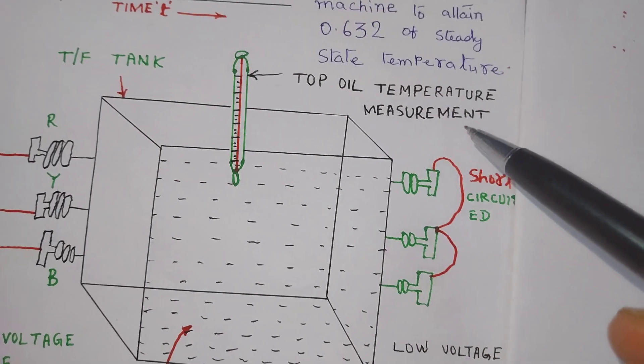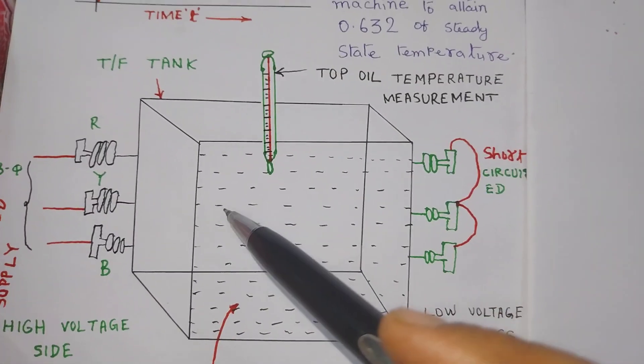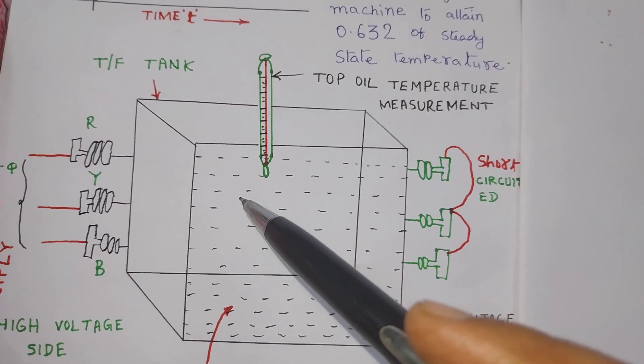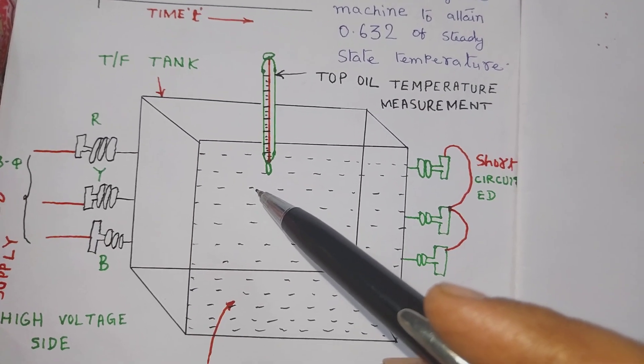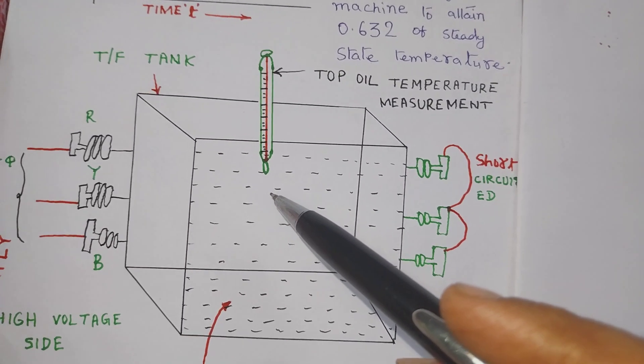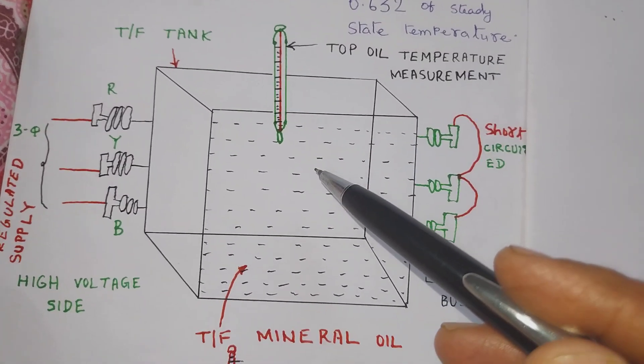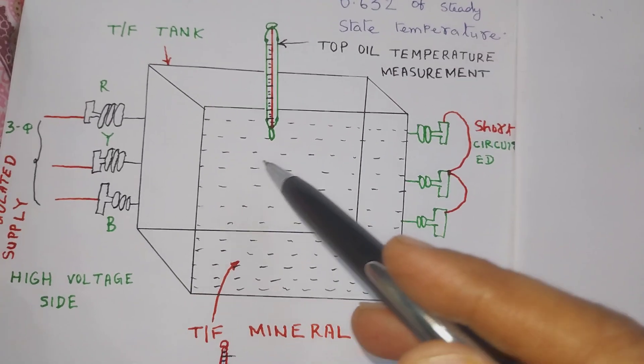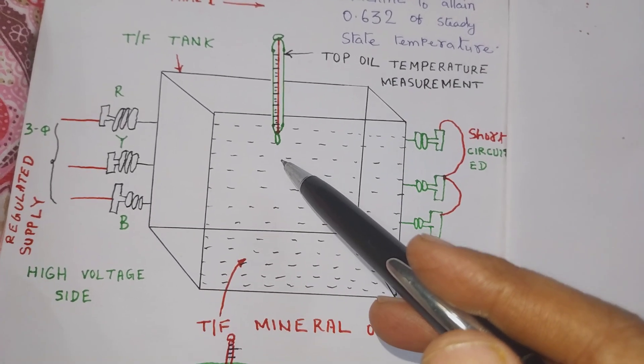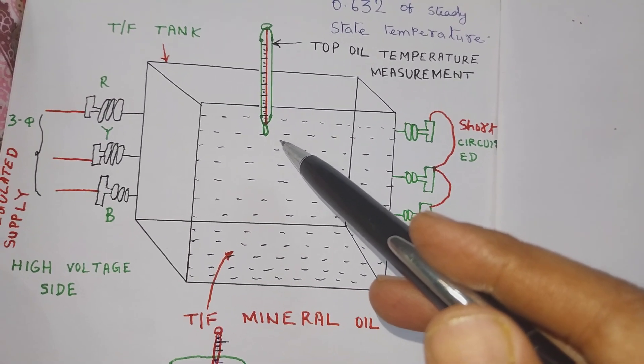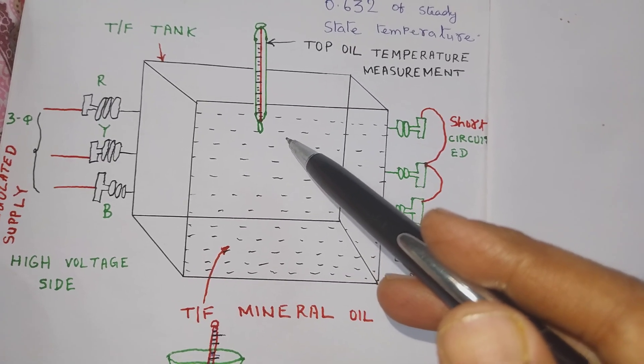So we learn the heating time constant and the method to find out the heating time constant and temperature rise of the transformer. In case temperature rise is large, more than 40 degree centigrade, the transformer could not be said to have been rated for the declared capacity of the transformer.